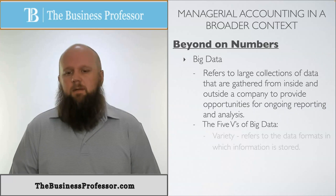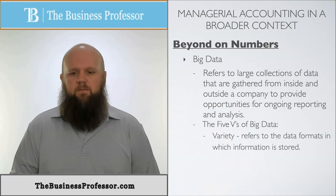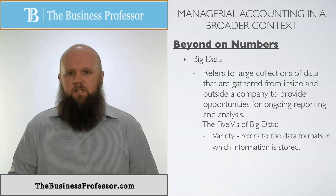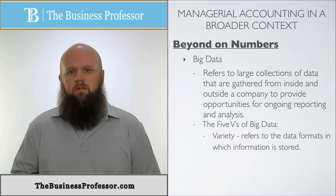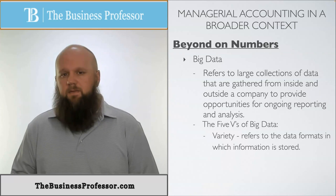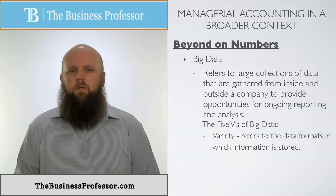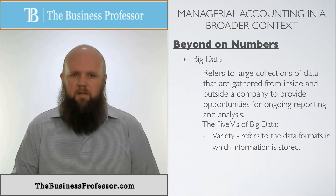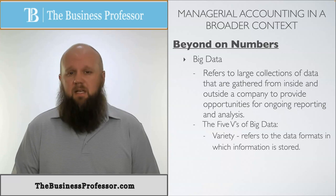The first one is called variety. Variety refers to the data's format in which information is stored. You don't want all your data stored in a single format or a single file, because if something were to happen to that file, you would lose it. So you have different ways that you can store it, import it, and save it.